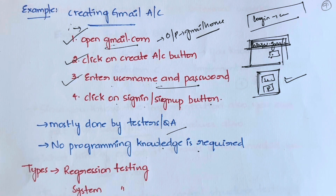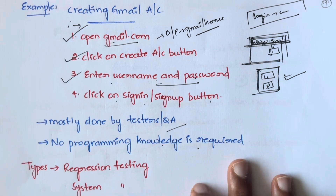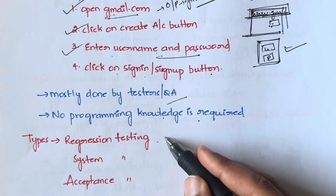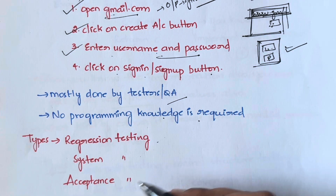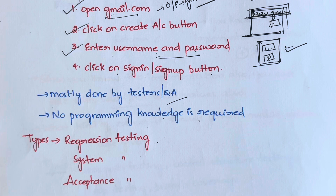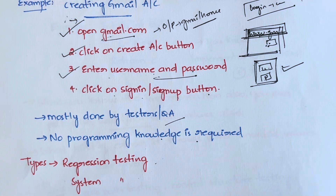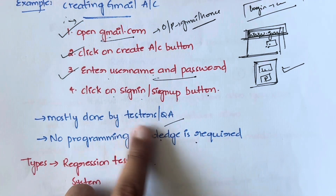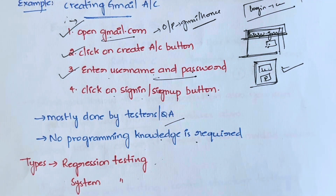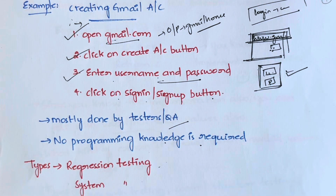This testing is mostly done by testers or QA — Quality Assurance — teams. In order to do this, no programming knowledge is required, because you are just comparing the screens or comparing the output. In black box testing there are three types: regression testing, system testing, and acceptance testing. We will be learning about these in detail in the next coming videos. For now, the key things to remember are: internal logic you don't know, it is mostly done by the QA team, and no programming knowledge is required.